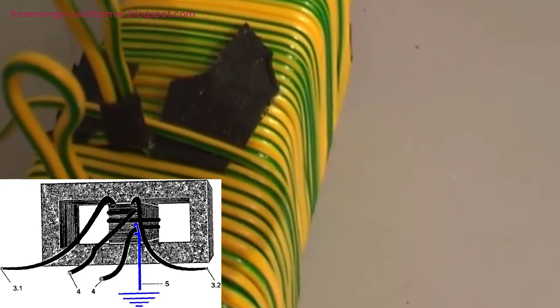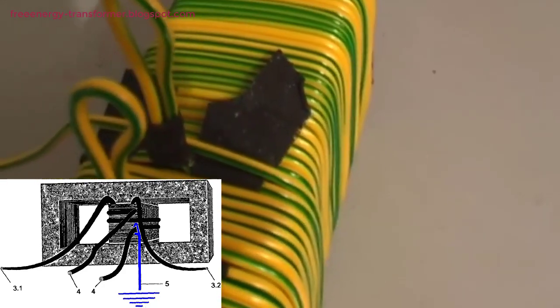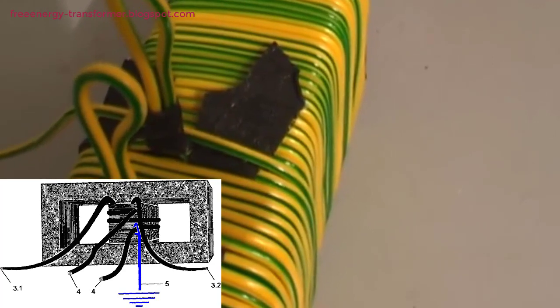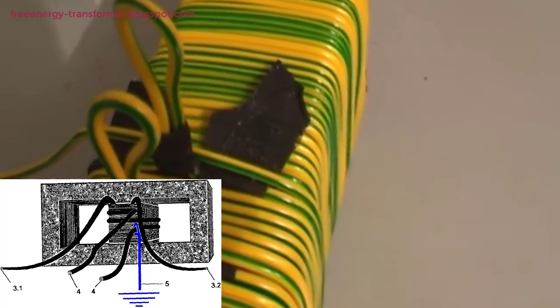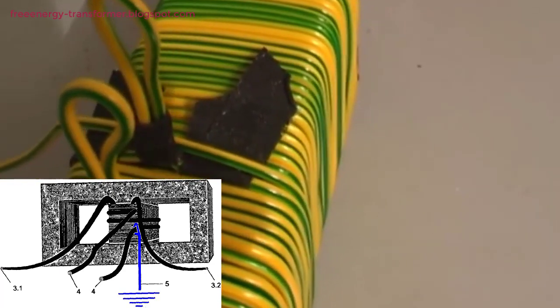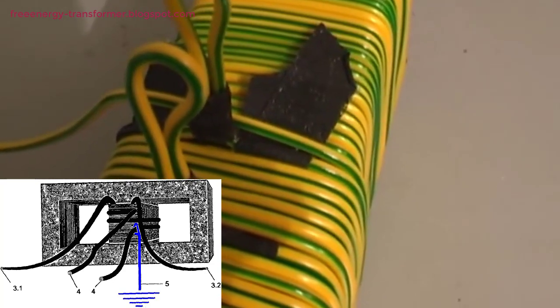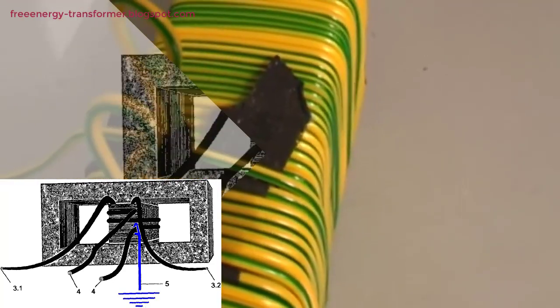The heart of Barbosa and Leal's invention lies in its continuous conductive loop, where current flows persistently without the need for an applied voltage. Unlike traditional generators, the magnetic fields of electromagnets maintain the flow of current, creating a self-sustaining system.